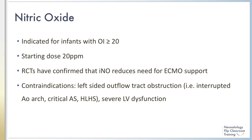iNO therapy is generally initiated at oxygenation indices greater than or equal to 20, and most commonly at a dose of 20 parts per million. Higher doses are not recommended because they are associated with increased levels of methemoglobin and nitric dioxide. iNO is effective in improving hypoxemia and reducing the need for ECMO. Its only FDA indication is the treatment of PPHN in term and late preterm infants greater than 34 weeks gestational age. Care must be taken when weaning iNO, as exogenous nitric oxide suppresses endogenous nitric oxide production, and abrupt cessation can result in rebound pulmonary hypertension. Rapid discontinuation should only occur in infants who do not respond to iNO, as prompt discontinuation can prevent endogenous suppression. Contraindications include left ventricular outflow tract obstruction and severe LV dysfunction — conditions that cannot handle increased LA and LV volume.